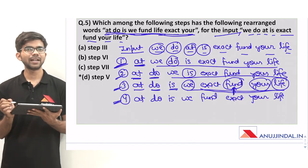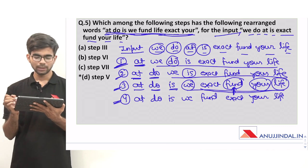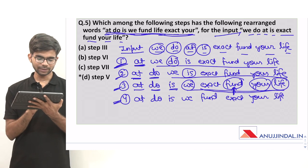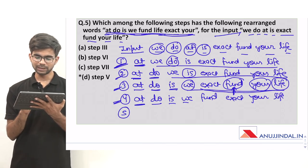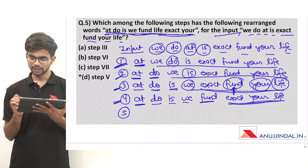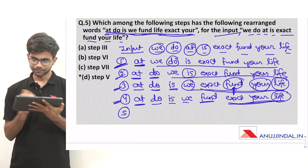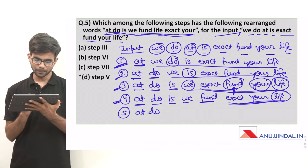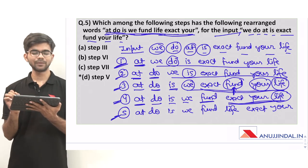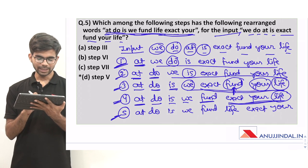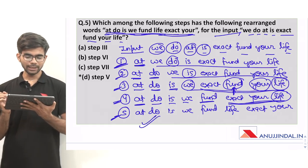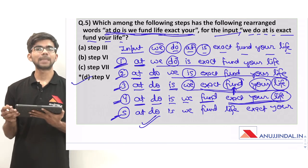Step 5: we have the first 5 words arranged. From the remaining 3 words, 'life' comes next. Step 5 is: at, do, is, we, fund, life, exact, your. Now checking — step 5 matches the output given in the question. So the correct option is option D, step 5.